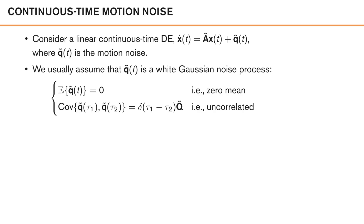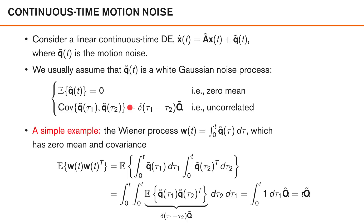This might look a bit complicated, but it turns out that we are generally not interested in the covariance of q̃ at a specific time. Instead, when we want to find the corresponding discrete time covariance matrix, we always encounter q̃ in an integral, and it turns out that when we consider an integral of q̃, this is actually not that complicated. In order to get at least some understanding of the properties of such an integral, let's look at the famous Wiener process. The Wiener process is just that — it's an integral of this type of noise, where the integral is taken from zero to time t.